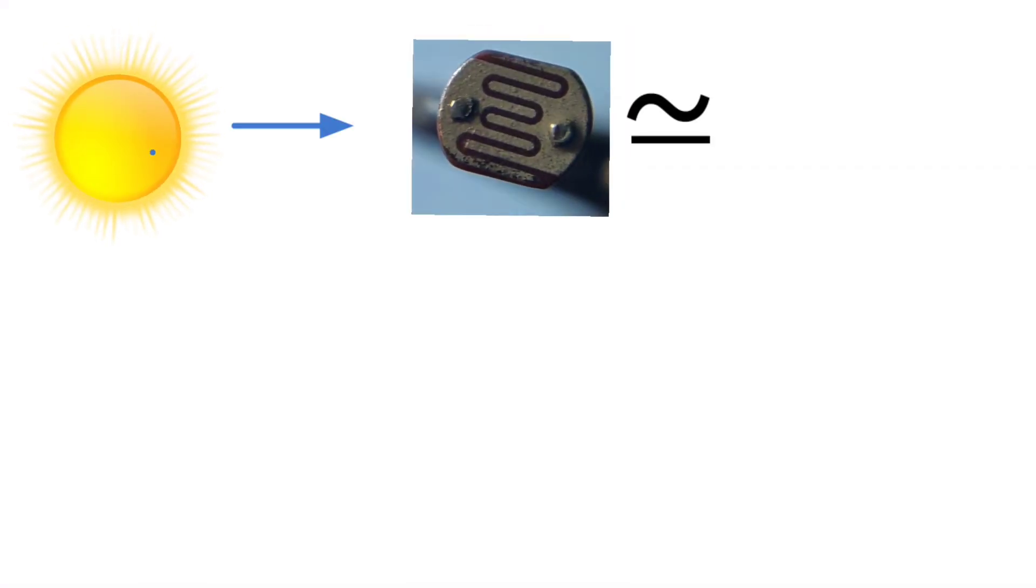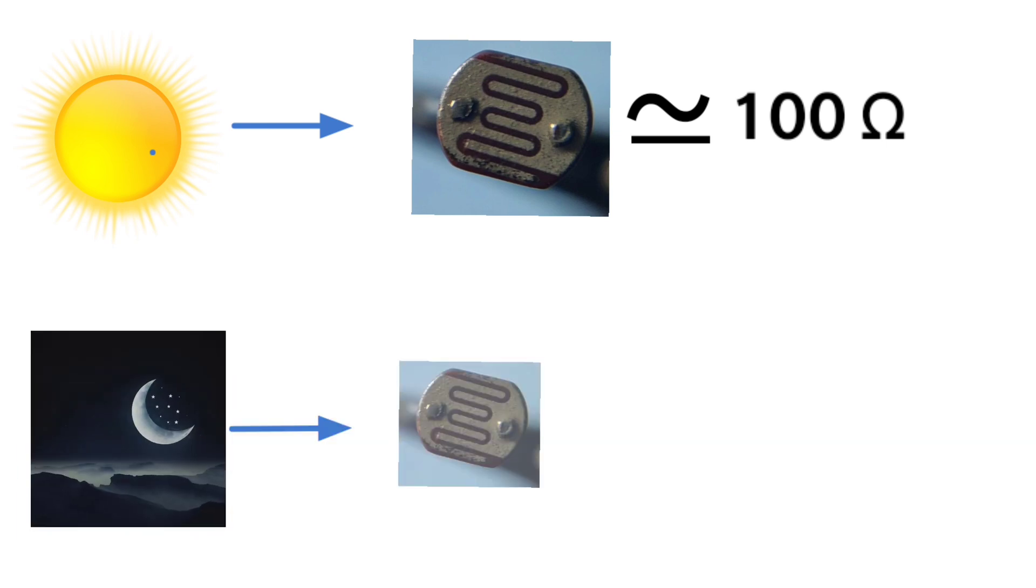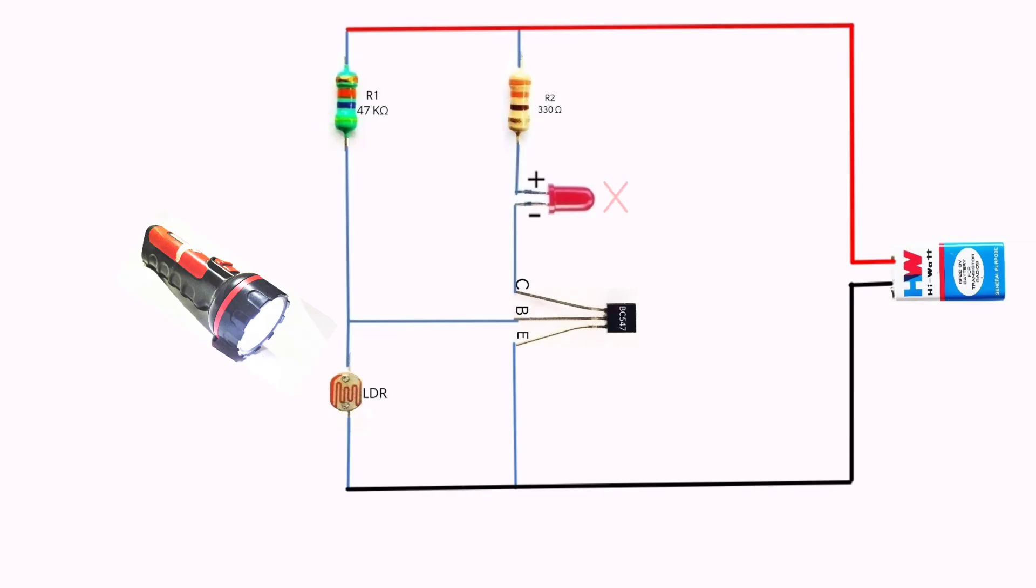In the light detecting sensor, the sensitivity of the sensor will vary according to the light incident on the sensor. And according to that, the transistor will switch on or off the LED.